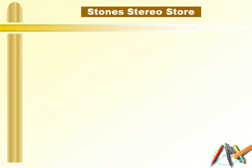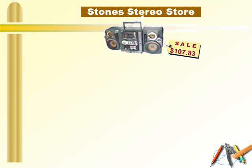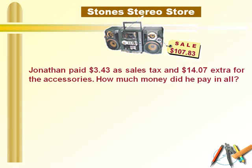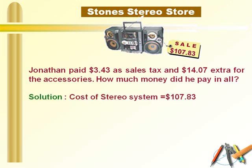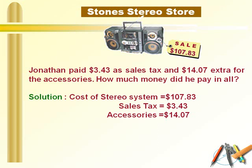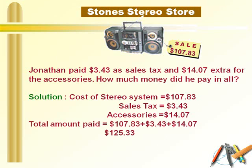Now look at this question. This picture shows the cost of a stereo system on sale, which is 107.83 dollars. Jonathan paid 3.43 dollars as sales tax and 14.07 dollars extra for the accessories. We need to find how much money he paid in total, so we simply add all these amounts: 107.83 plus 3.43 plus 14.07, which gives us a total of 125.33 dollars.